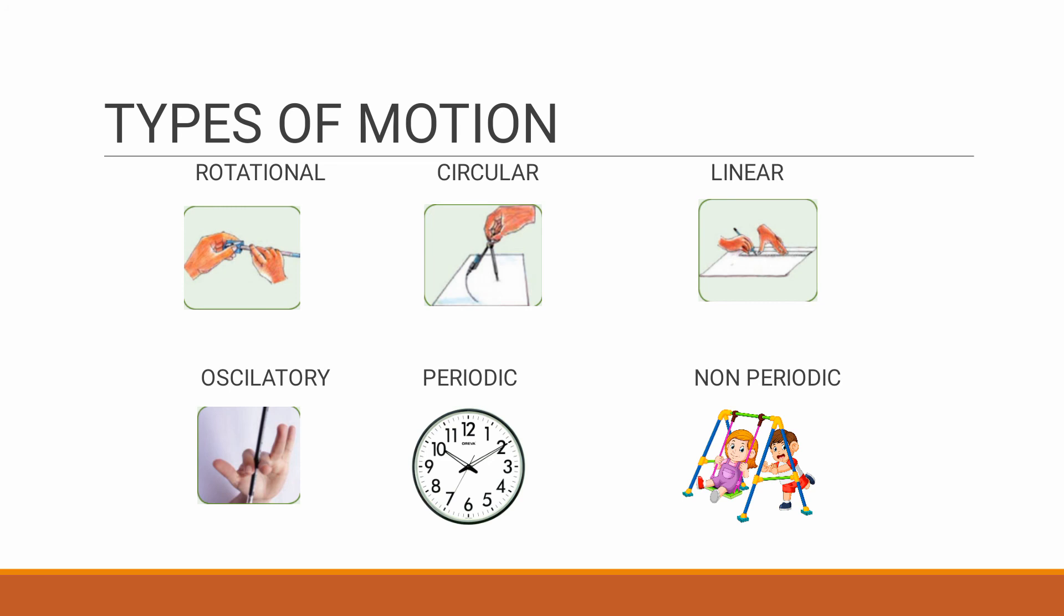Oscillatory movement, for this the example is pendulum. It moves to and fro, that is move forward and backward. Then periodic motion, periodic means it moves in a regular interval. Example is clock because for every five minutes the minute hand moves exactly one number in the clock. Non-periodic motion means it moves in different time period with different speed or force. Example is swing. Here we can make the swing move faster for some period and move slower for some period, so it comes under non-periodic motion.